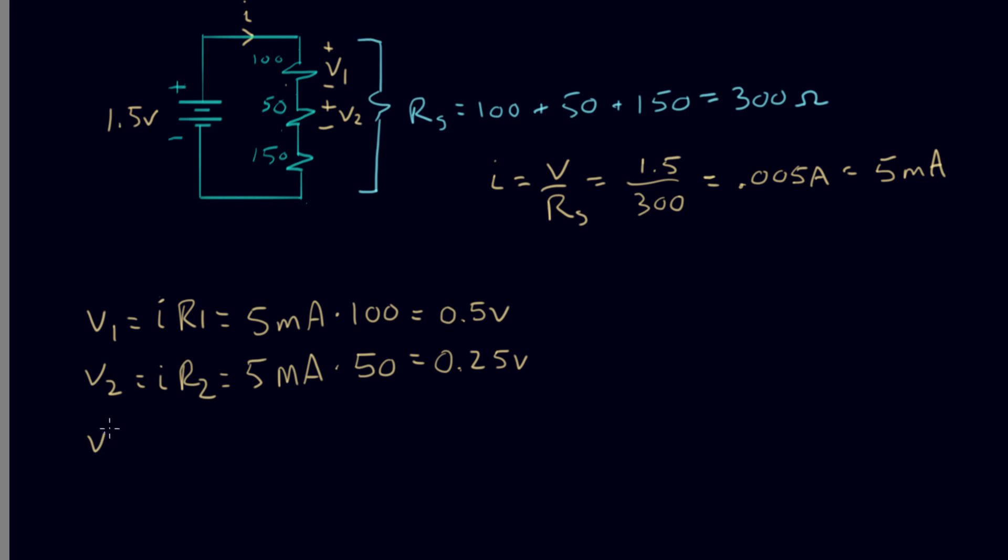And finally we do V3. This is plus minus V3. And that equals the same current again times 150 Ohms, which is equal to 0.75 volts.